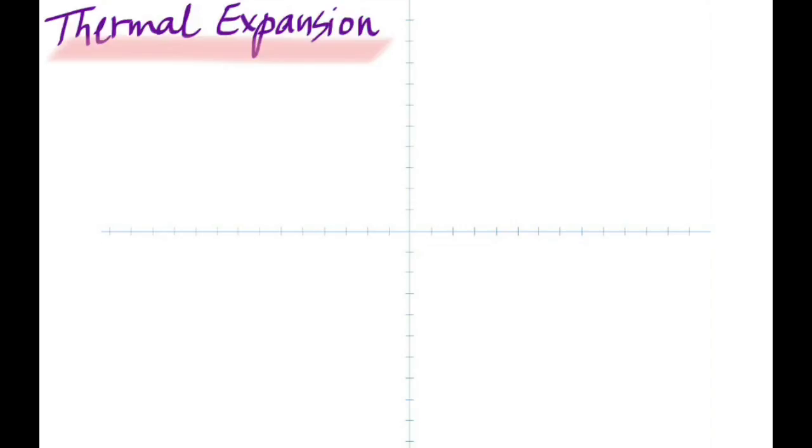In summer both the door and frame expand, and in winter both contract. The key is: do they expand or contract equally? The door frame is slightly bigger originally, so expansion depends on original length. The door frame, being a little bigger, will expand more in summer — so there will be a gap. In winter both contract, but the door frame contracts more, causing the door to jam.